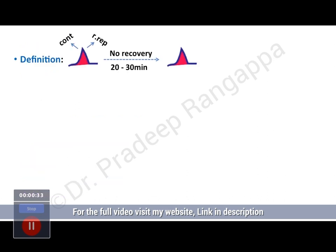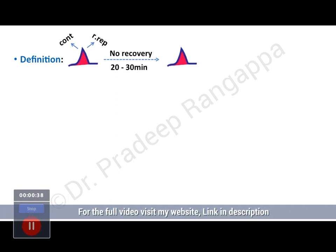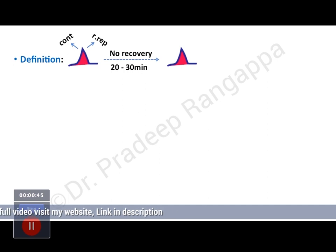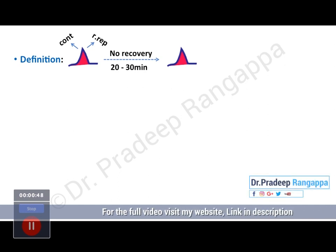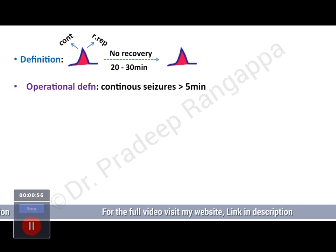Looking at the definition of status epilepticus — this is something you need to know for clinical practice. It is continuous and rapidly repetitive seizure activity with no recovery, lasting for up to 20 to 30 minutes. There may be certain small periods when they have a seizure-free interval, but there is no recovery of the conscious level and it keeps recurring for around 20 to 30 minutes.